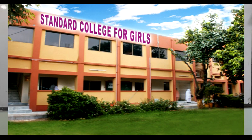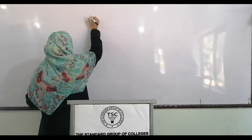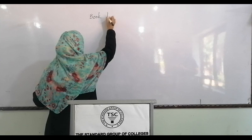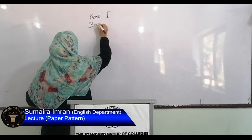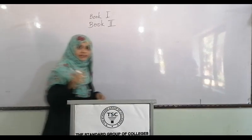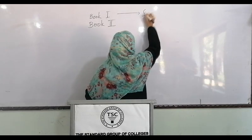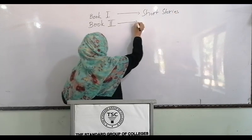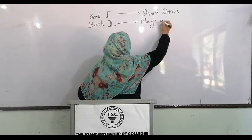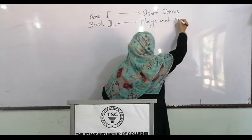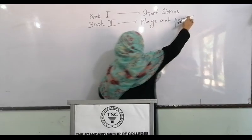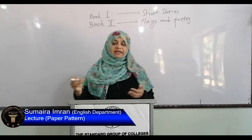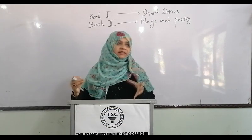In Intermediate Part 1, you will read Book 1 and Book 3. Book 1 is Short Stories and Book 3 is Plays and Poetry. You will have two books available in the market, so please keep them with you so you can actively attend lectures and keep learning.